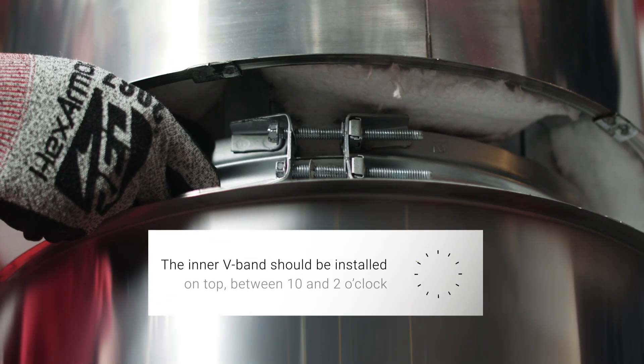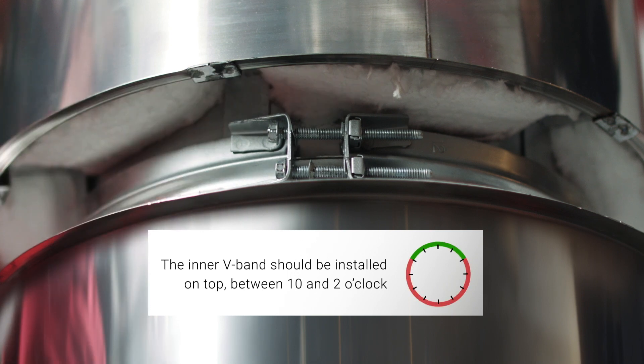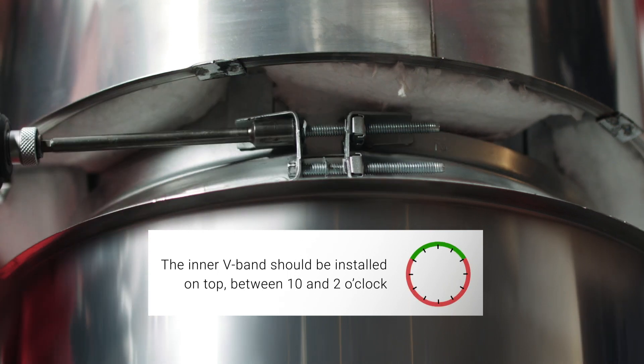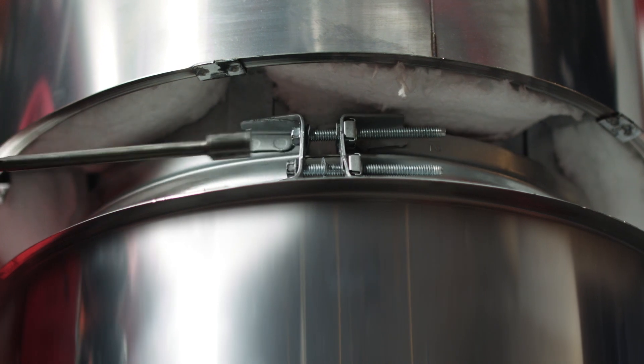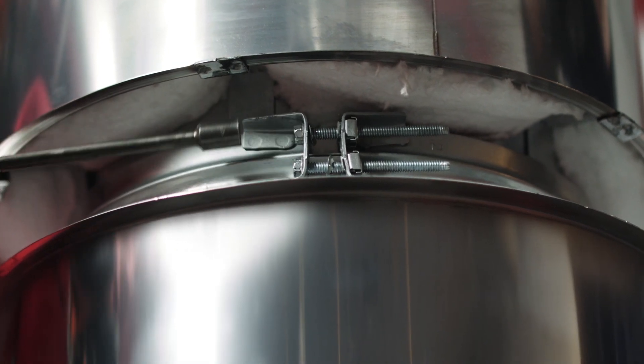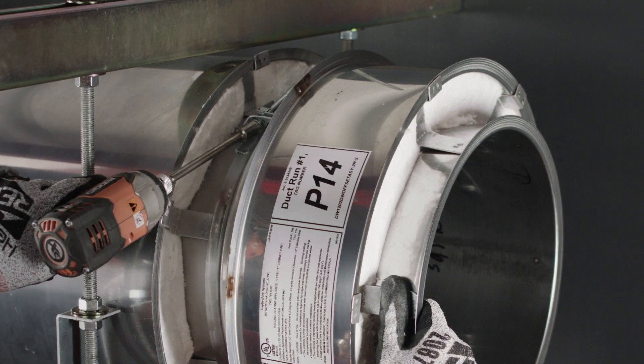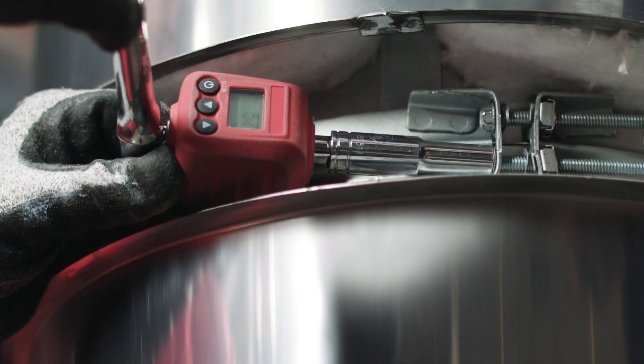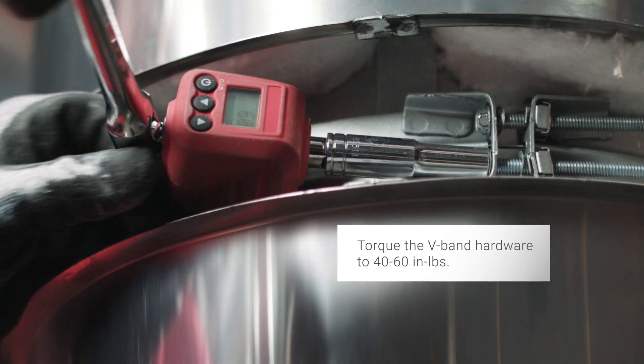For horizontal duct runs, the V-band hardware should be located on the top side of the duct between 10 and 2 o'clock. Alternate between the two bolts as you tighten. The final torque should be between 40 and 60 inch-pounds.